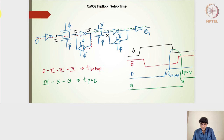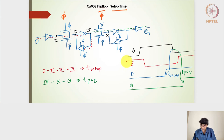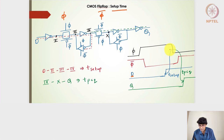Now let's understand the setup time for flip-flop designs. For this negative edge-triggered flip-flop, I've considered a positive-level latch first followed by a negative-level latch. The setup time definition is very similar to the latch. The question is: how far before the clock falling edge must D be available so the flip-flop output captures it properly? The answer: D must be available at least before the t_setup time of the clock going low.